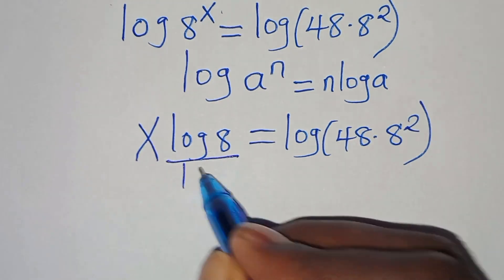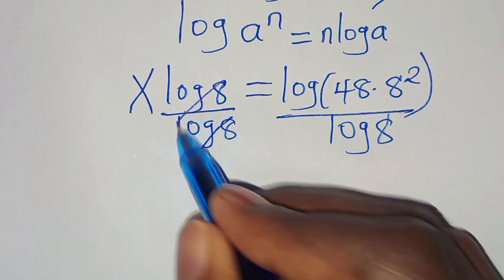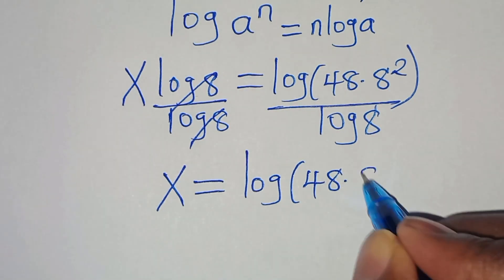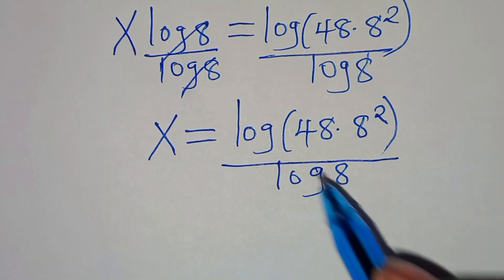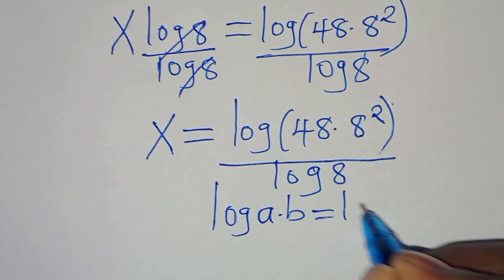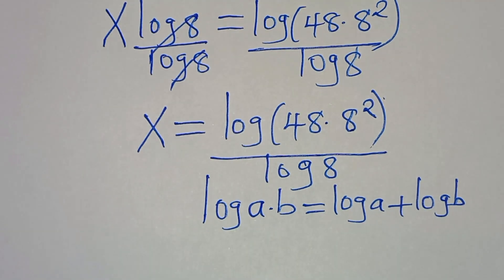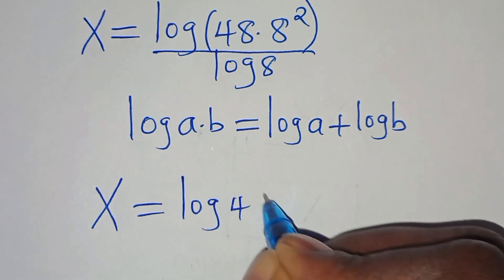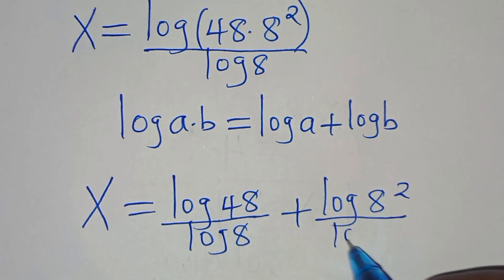Let's divide both sides by log(8), simplifying log(8) and log(8), so that x equals log(48 times 8 to the power of 2) all divided by log(8). Now log(48 times 8^2) is in the form log(a times b), which can be expressed as log(a) plus log(b). Applying this logarithm property, we have x equals log(48) divided by log(8), plus log(8 to the power of 2) divided by log(8).